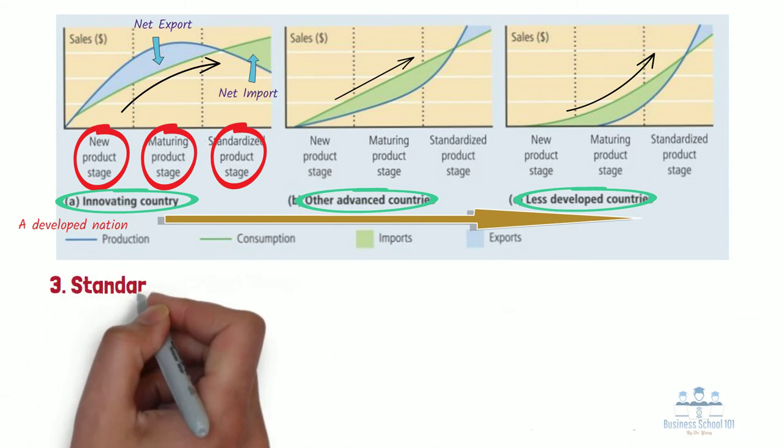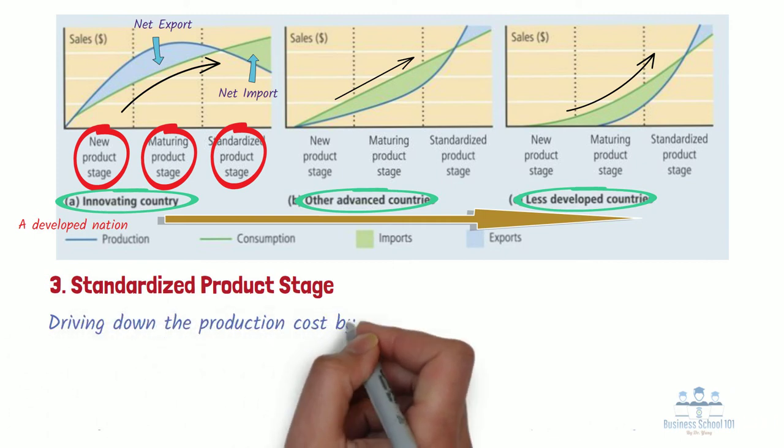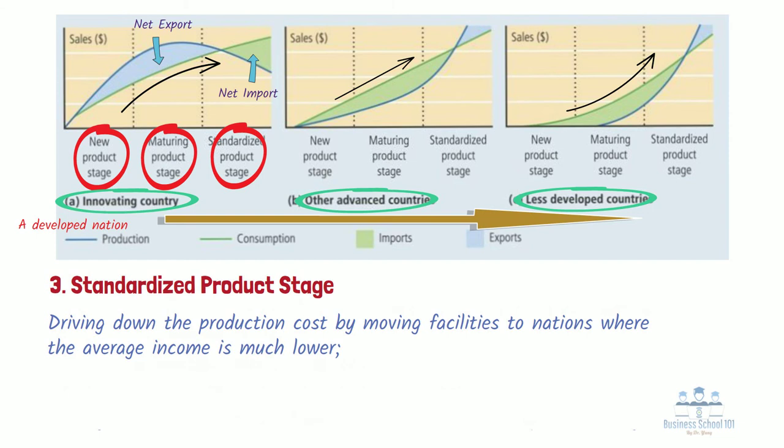Last, the standardized product stage. At this stage, exports to nations with less developed economies begin in earnest. Competitive product offers saturate the market, which means that the original purveyor of the product loses their competitive edge on the basis of innovation. In response to this, the corporation focuses on driving down the production cost by moving facilities to nations where the average income is much lower, and by standardizing and streamlining the manufacturing methods needed to make the product.